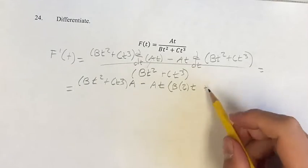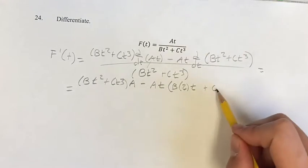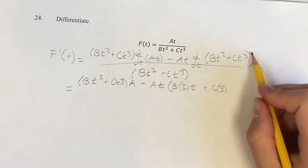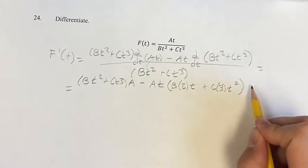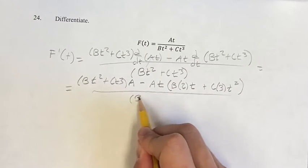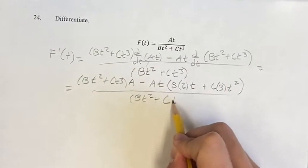Plus C, bring down the 3, just like with the last one. New exponent: 3 minus 1, which is 2. This is over Bt squared plus Ct cubed.